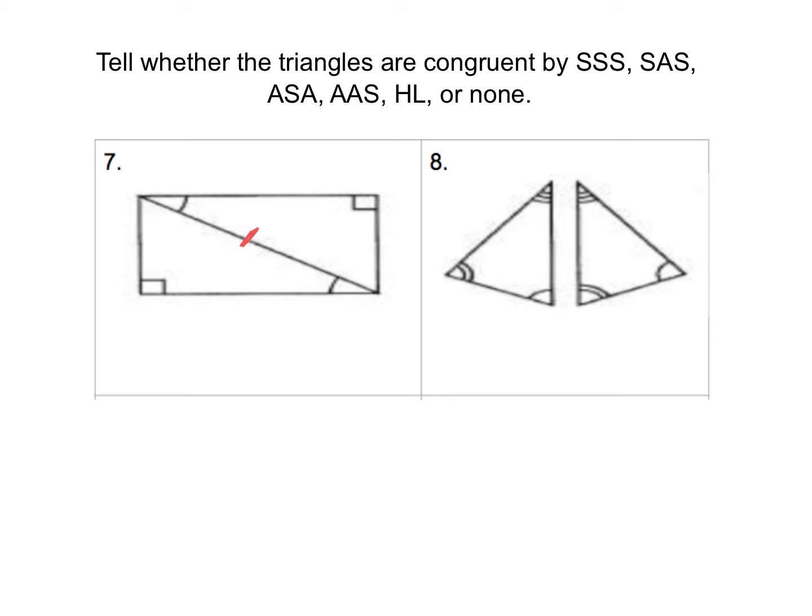Now, it might be tempting to think this is hypotenuse leg because of the right triangle, but we only have a hypotenuse here. We don't have any legs. What we do have, though, is two pairs of angles and a side. That means it's either ASA or AAS. To figure out which one it is, look at the position of the side. For ASA, the side has to be between the two angles. You can see here that my side is not the side that connects the 90 to the one arc. It's a separate, non-included side. Therefore, these two triangles are congruent by angle-angle-side.